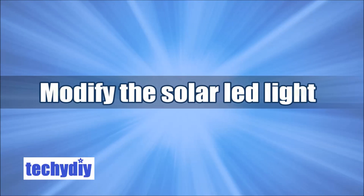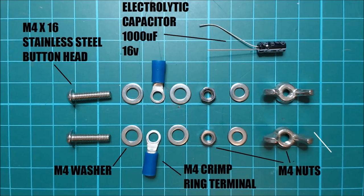To modify the solar light we are going to need a few other parts. Firstly M4 stainless steel screws, washers and nuts. Ebay's a good place to obtain these. M4 crimp ring terminals, stranded copper wire and lastly an electrolytic capacitor. I used a 1000 microfarad 16 volt device but the value is not critical and it will even function without the capacitor.